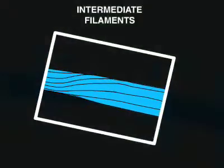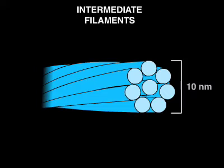Each filament is rope-like, consisting of eight thinner strands made of a precise hierarchical arrangement of protein subunits.